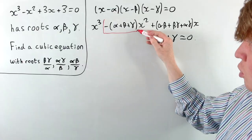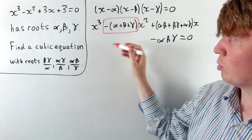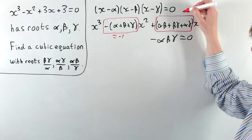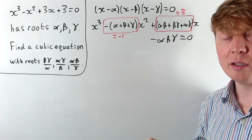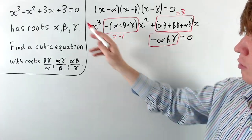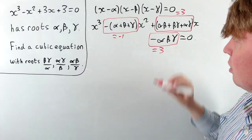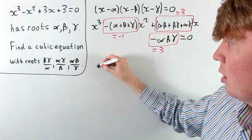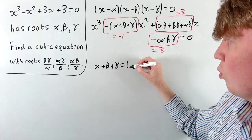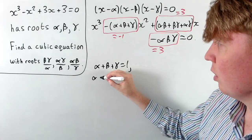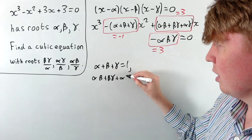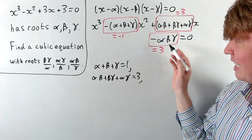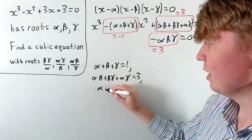The coefficient of x squared is equal to negative one, and the coefficient of x is equal to three. So we can read off: the negative of alpha plus beta plus gamma is negative one, so the sum alpha plus beta plus gamma equals one. The sum of all the pairs, alpha beta plus beta gamma plus alpha gamma, equals three. And the negative of the product is three, so the product alpha beta gamma equals negative three.